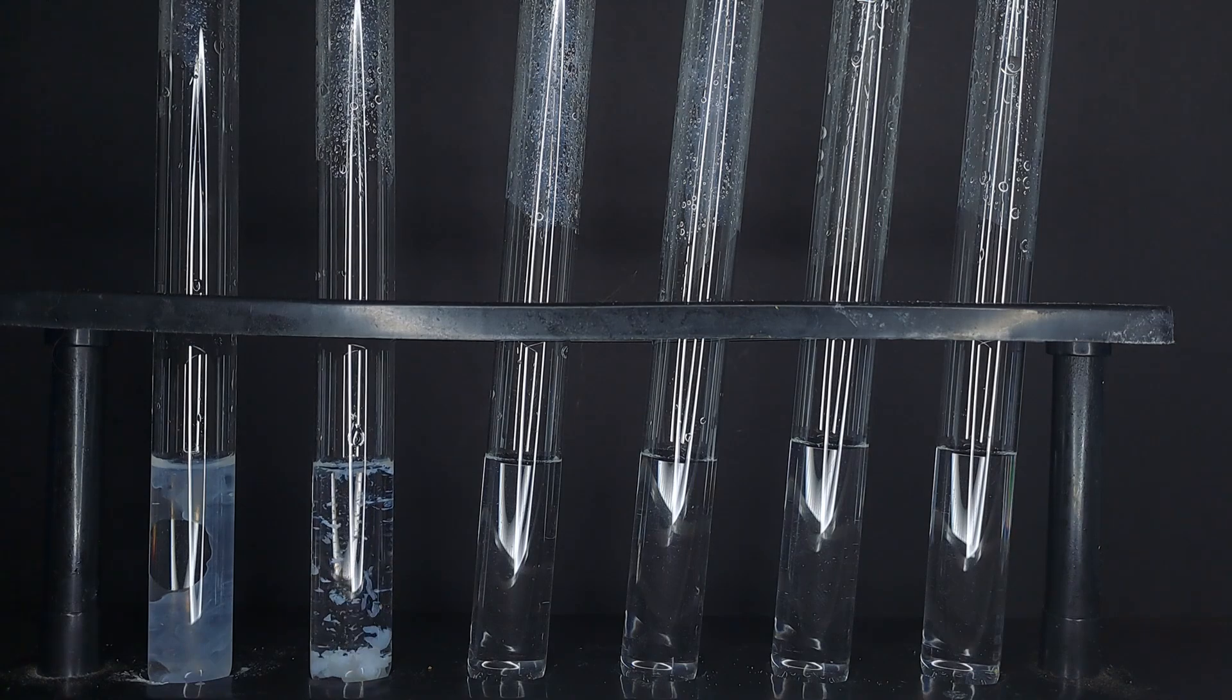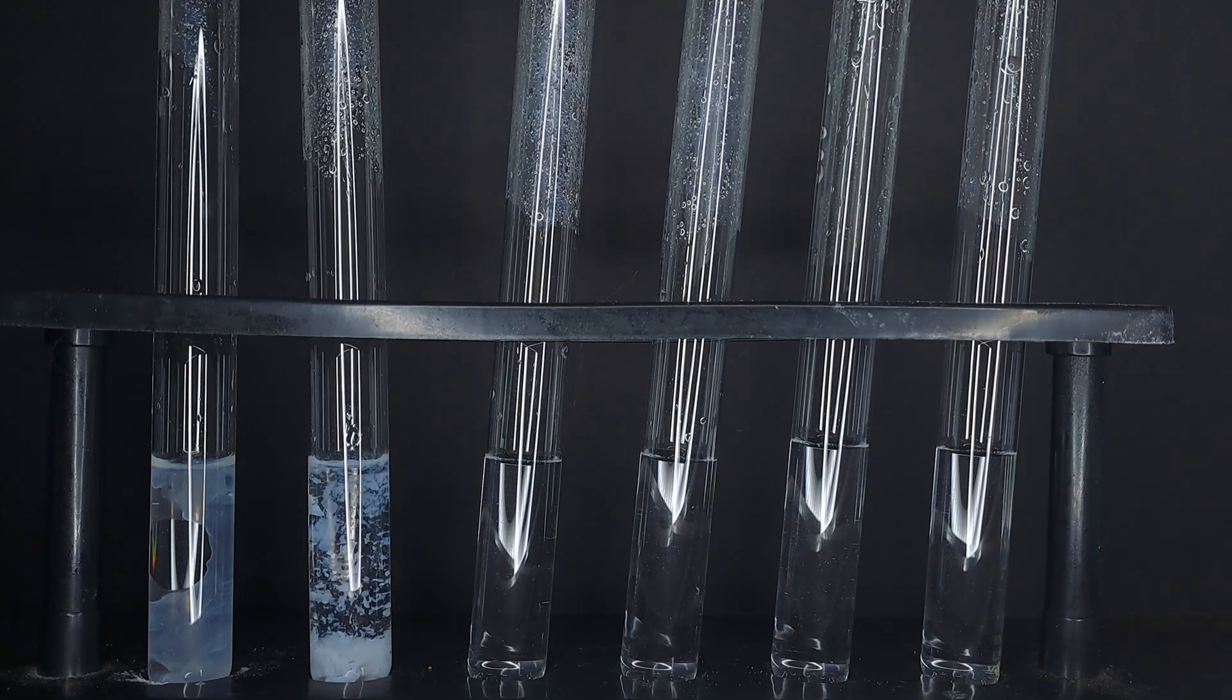Adding potassium iodate to the second test tube results in a white flocculant precipitate.